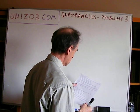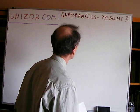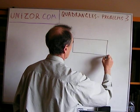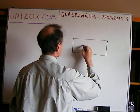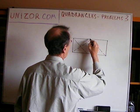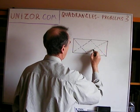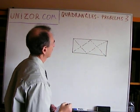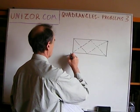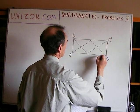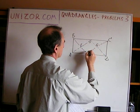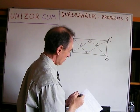Prove that the angle bisectors of a rectangle form a square. You have a rectangle, and you draw its four angle bisectors. If done precisely, the intersection points E, F, G, H form a square.